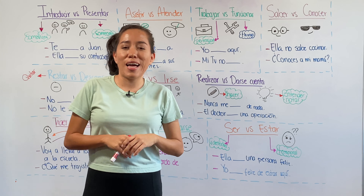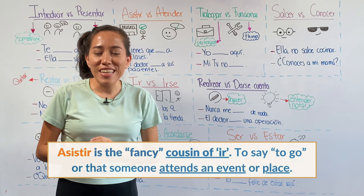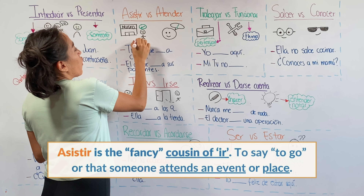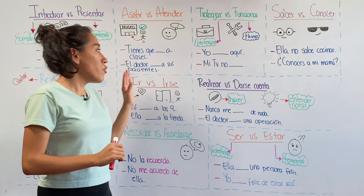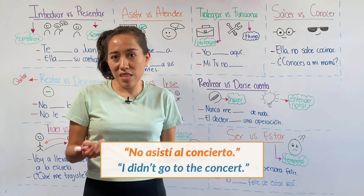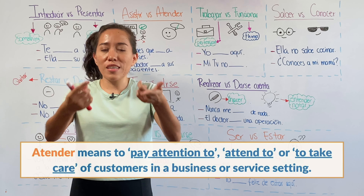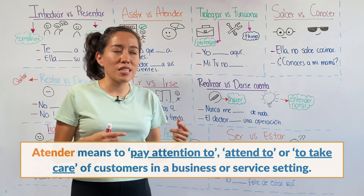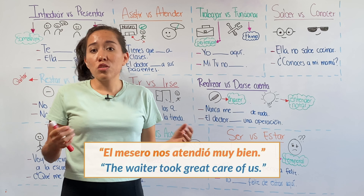Asistir versus atender. In Spanish, asistir is the fancy cousin of ir. We use it to express that a person goes from point A to point B, or to say that someone attends somewhere — for example, no asistí al concierto, I didn't go to the concert. Atender, on the other hand, has many meanings. It's usually related to paying attention or receiving customers or clients. For instance, el mesero nos atendió muy bien — the waiter took great care of us.